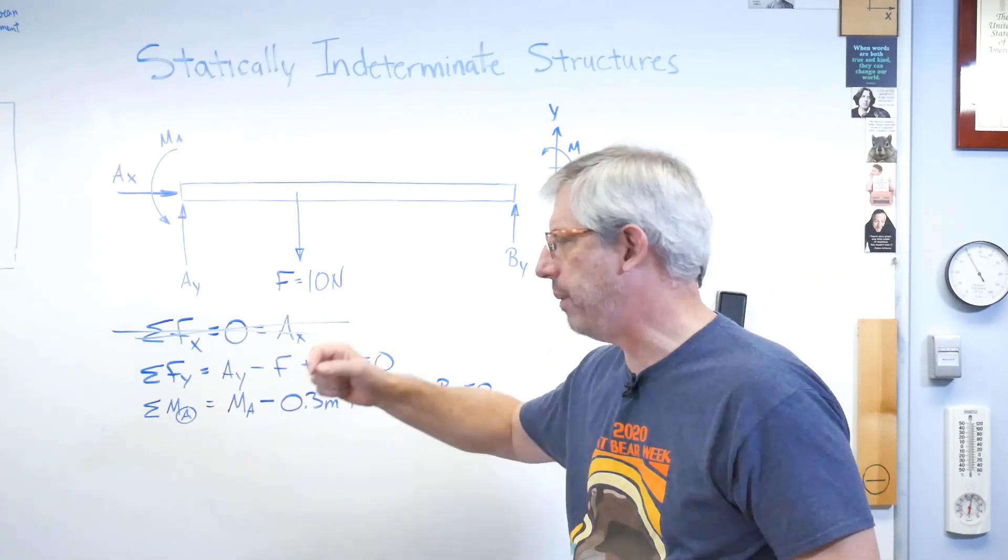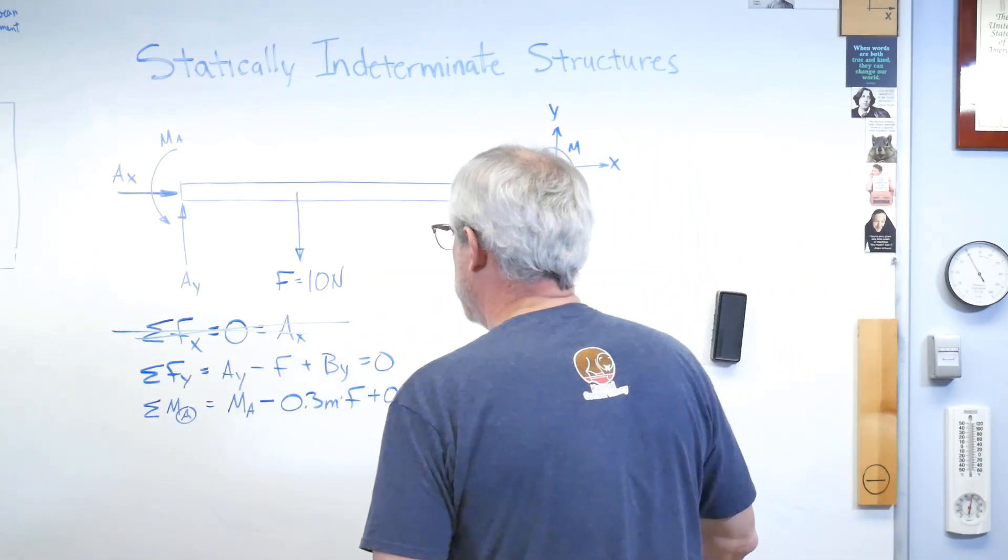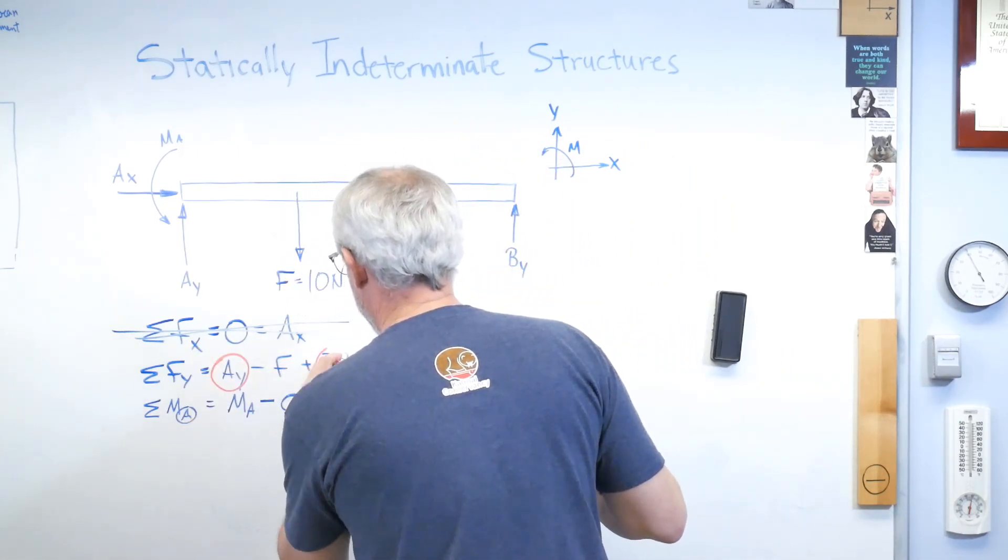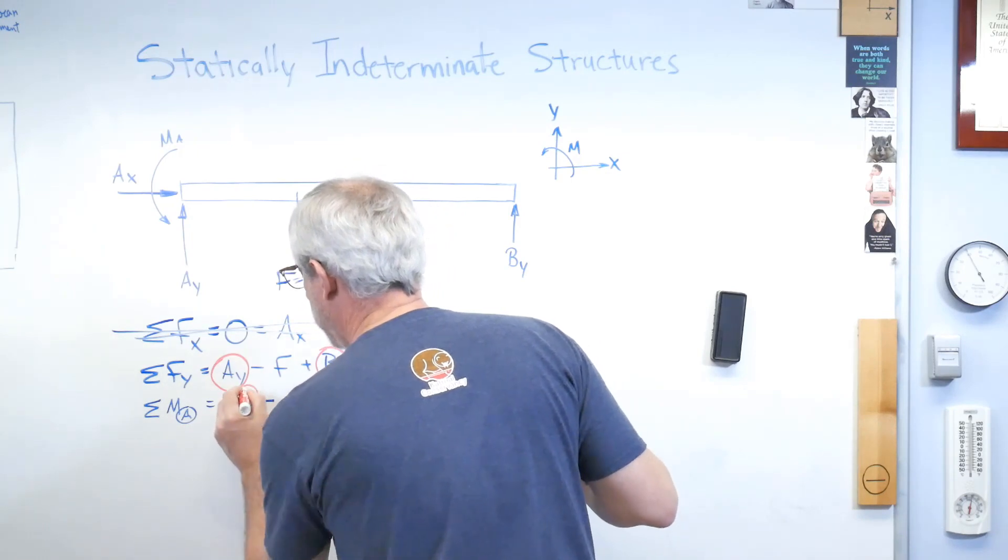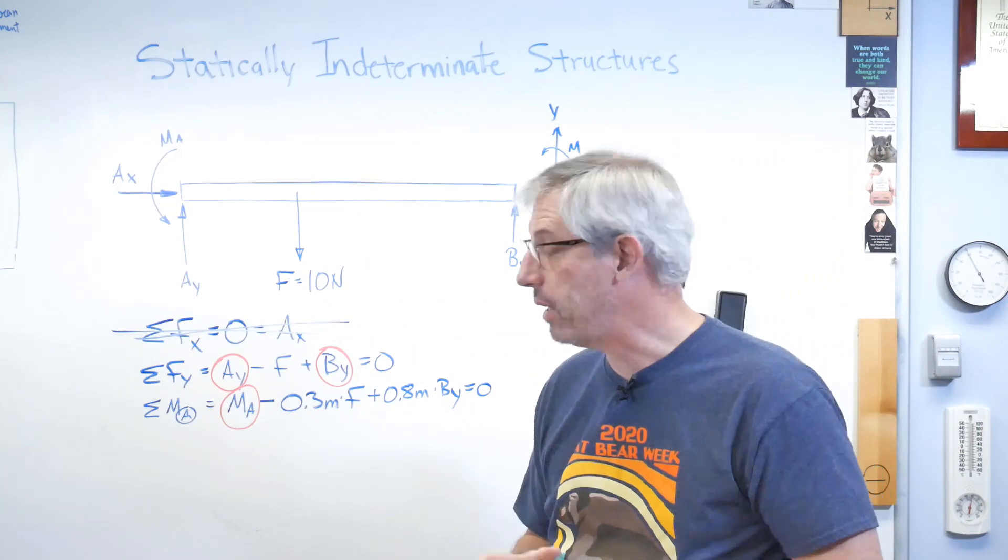But wait a minute. I'm going to circle the things I don't know in red here to make sure we get the point. There's one thing I don't know, there's another thing I don't know, but dang it, there's another thing I don't know. Now I've got two equations and I got three unknowns.